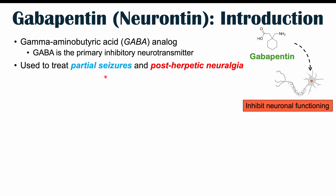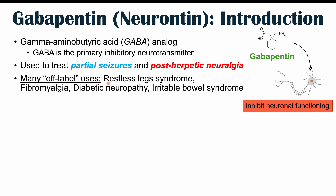Gabapentin is used to treat partial seizures and post-traumatic neuralgia. In its ability to suppress neuronal functioning, it can help with partial seizures and post-traumatic neuralgia. Neuralgia is nerve pain, and post-traumatic refers to nerve pain that occurs after a shingles infection. Those are the two official conditions gabapentin is used for, but it also has many off-label uses.